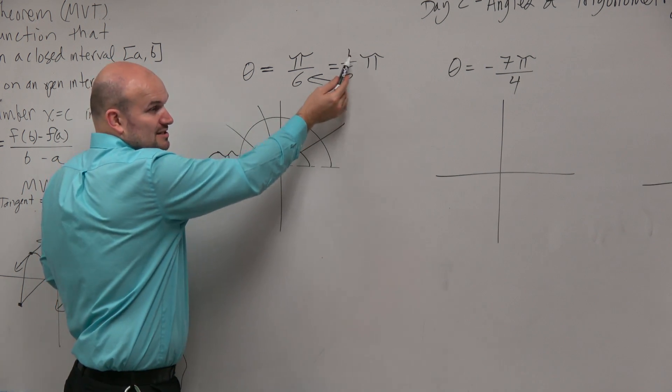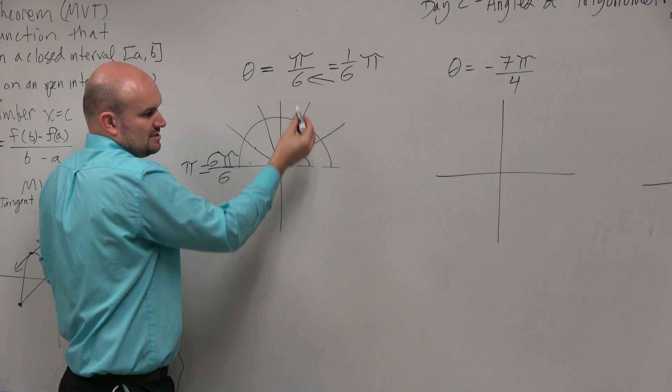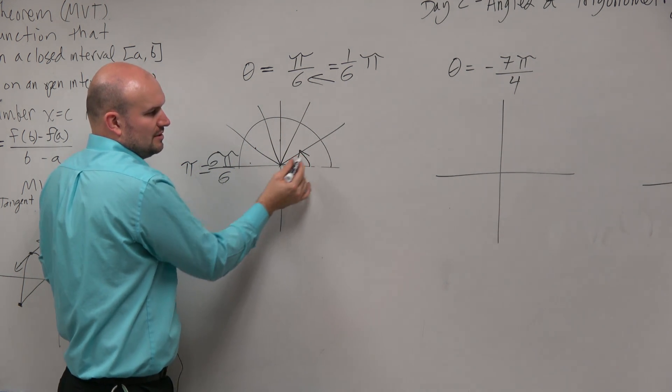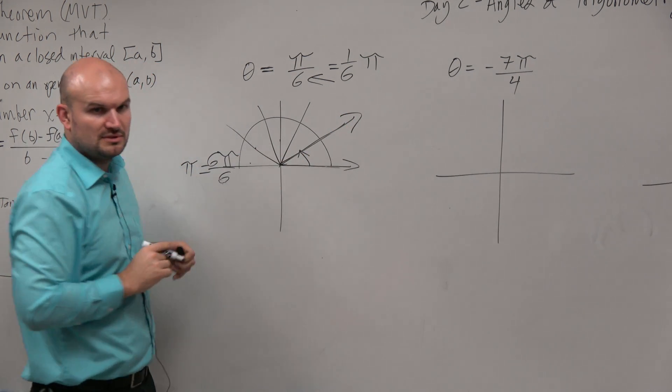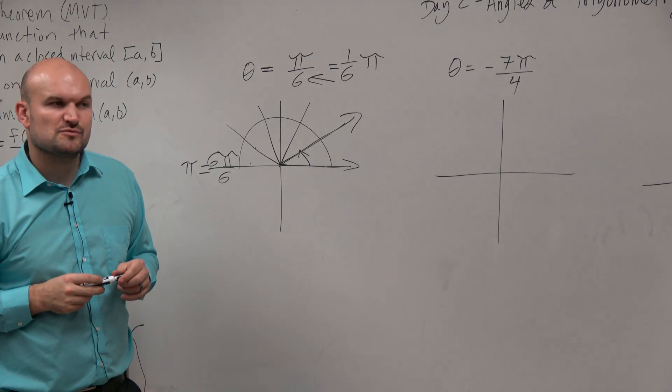And again, what are they asking us? They only want pi over 6. They only want one point. So there's your initial side and there's your terminal side. Boom, right there, rotation, done. OK, that's your angle pi over 6.